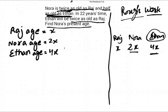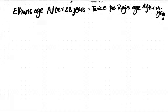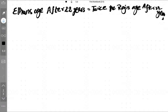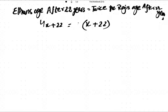Now on the next step we will solve this. Athan's age now is 4x. After 22 years: 4x + 22 is equal to twice Raj's age after 22 years, which is 2 times (x + 22).